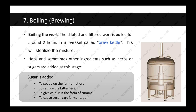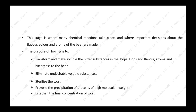The next step is the brewing or boiling of the wort. The diluted and filtered wort is boiled for around two hours in a vessel called a brew kettle, as seen in the diagram. This sterilizes the mixture. Hops and sometimes other ingredients such as herbs or sugars are added at this stage. Sugar is added to speed up fermentation, reduce bitterness, give color in the form of caramel, or cause secondary fermentation. The purpose of boiling is to transform and make soluble the bitter substances in the hops, eliminate undesirable volatile substances, sterilize the wort, provoke precipitation of high molecular weight proteins, and establish the final concentration of wort.